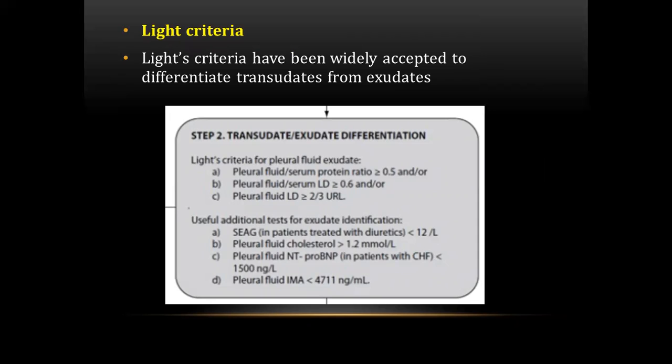The next question was about Light's criteria. Light's criteria have been widely accepted to differentiate between transudate and exudate. The criteria for pleural fluid exudate are: pleural fluid to serum protein ratio more than or equal to 0.5, pleural fluid to serum LDH ratio more than or equal to 0.6, and pleural fluid LDH more than or equal to 2/3 of the upper reference limit.